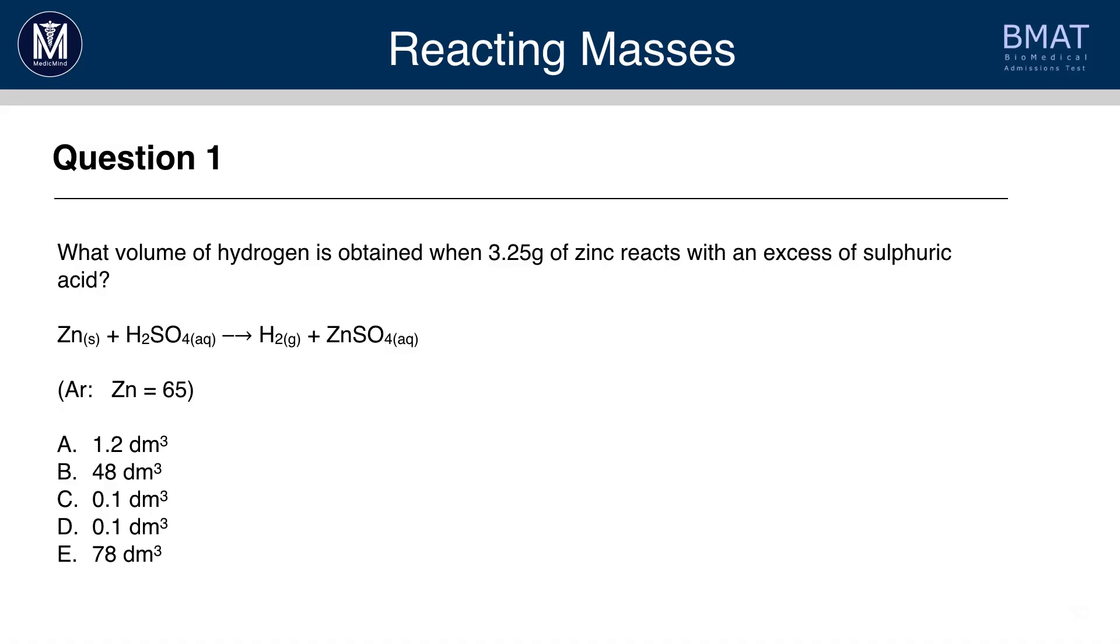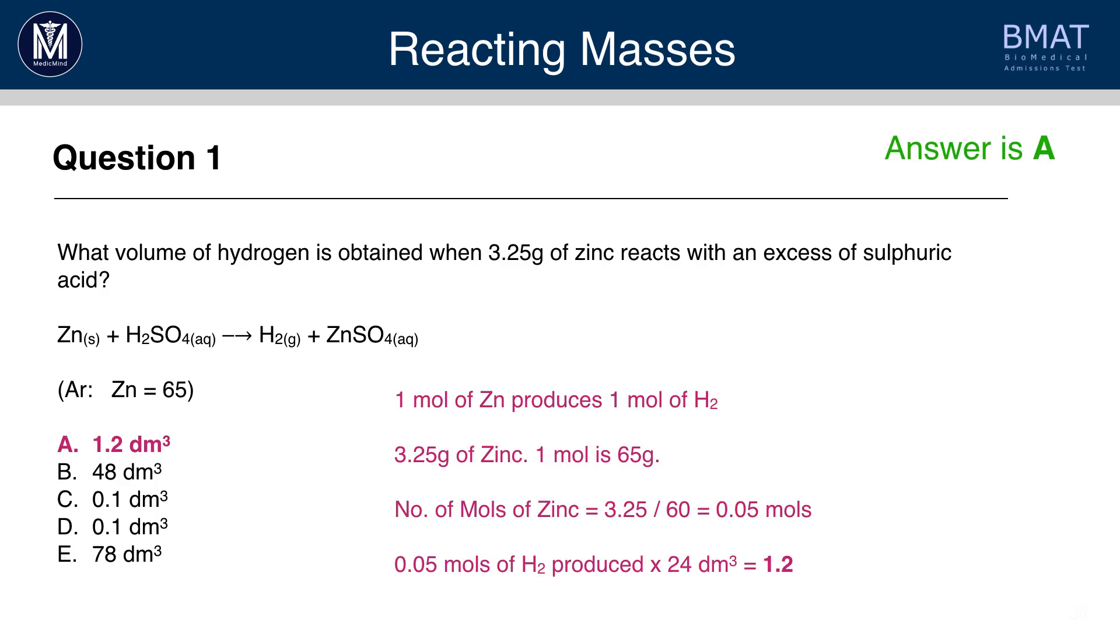Pause the video and have a go. The answer here is A. So, there is 3.25 grams of zinc. Looking at the balanced equation, we can see that 1 mole of zinc produces 1 mole of H2. So, bear in mind, when they give you an equation in the BMAT, if they don't ask you to balance it, you can assume that it's already balanced for you.